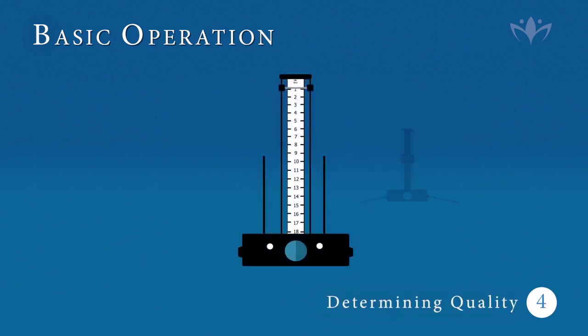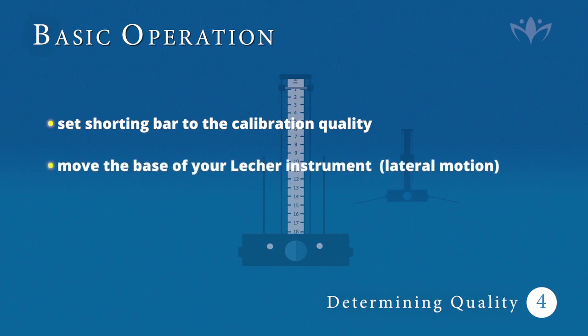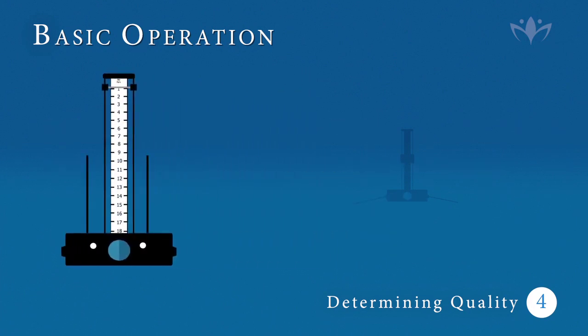4. Performing Qualitative Assessment. Set the shorting bar to the calibration of the energetic quality you wish to detect and proceed to move the base of your Lecher Instrument in a lateral motion starting from empty space to briefly settling over the product you are testing. Place the shorting bar at 2.5, which denotes the minimum required energetic quality of an object to be harmonious with a human being. Any item or substance from wristwatches to cell phones, foods, medications, or household cosmetics that do not respond to 2.5 are potentially harmful.